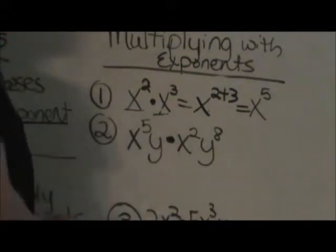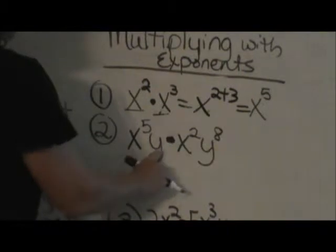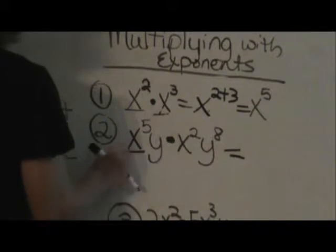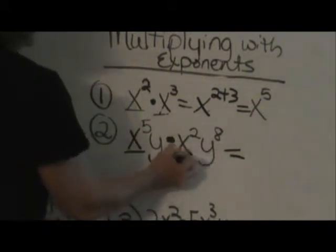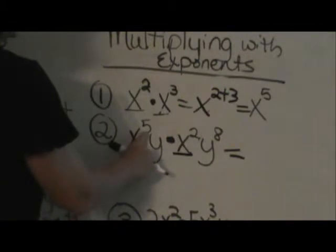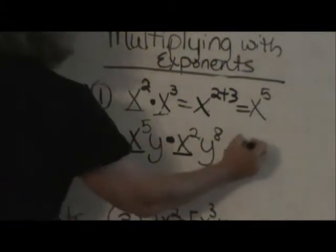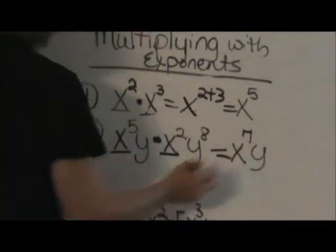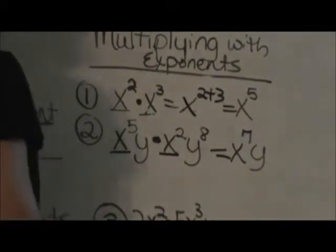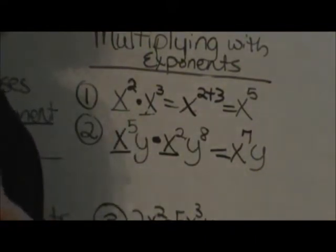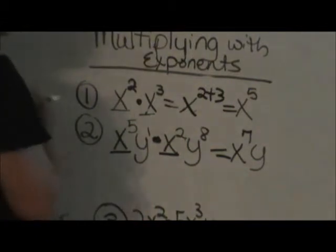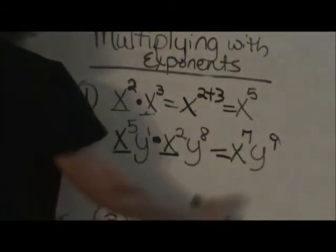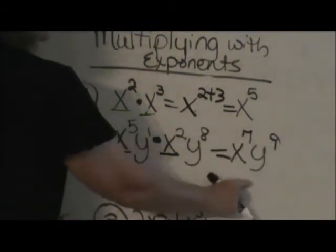Let's look at one that actually has two different variables in it, an x and a y. Let's look at our like bases. We have x to the fifth and over here we have x to the second. So we're going to add the exponents, 5 and 2, to get x to the seventh. Now on the y exponent, be very careful — we have a y and then we have a y to the eighth. When there's not an exponent listed, we assume that it is 1. So I'm going to write that 1 there to remind me to add 1 plus 8 to get our answer of 9. So the answer would be x to the seventh, y to the ninth.